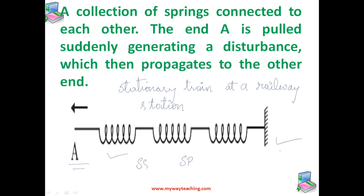The compression or rarefaction continuously moves from one region to another, making propagation of a disturbance possible in air. In solids, similar arguments apply. In a crystalline solid, atoms or groups of atoms are arranged in a periodic lattice. Each atom is in equilibrium due to forces from surrounding atoms; displacing one atom while keeping others fixed leads to restoring forces exactly as in a spring.